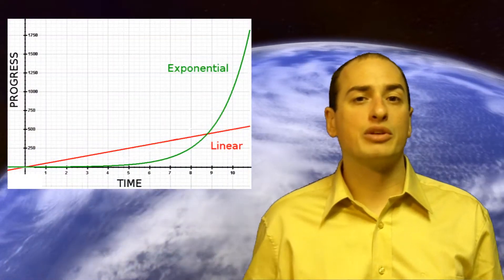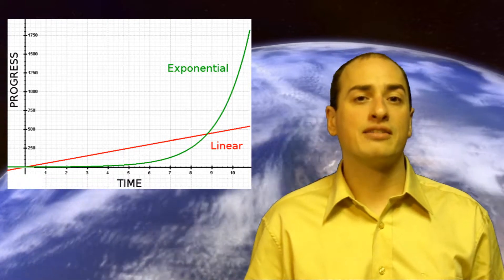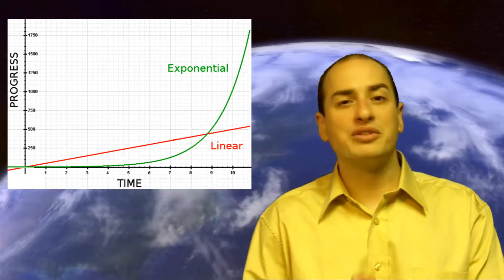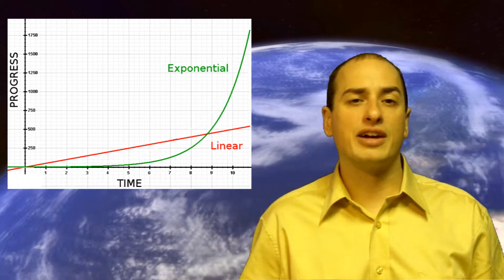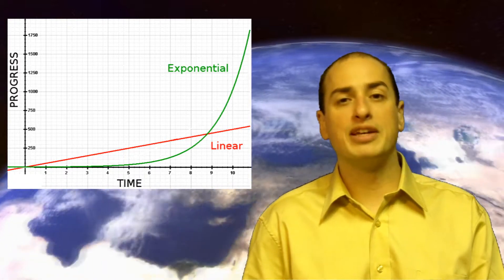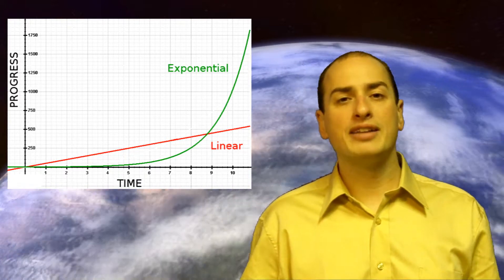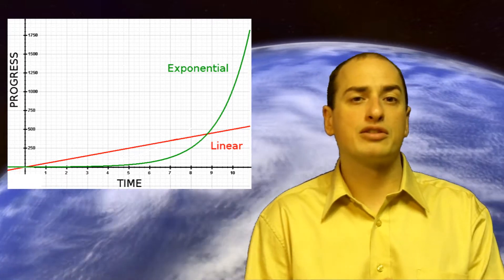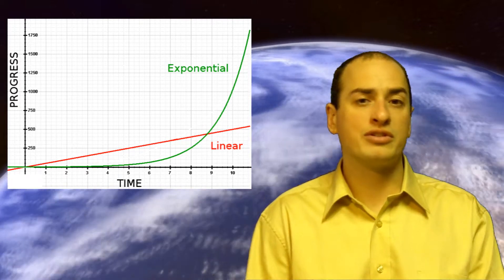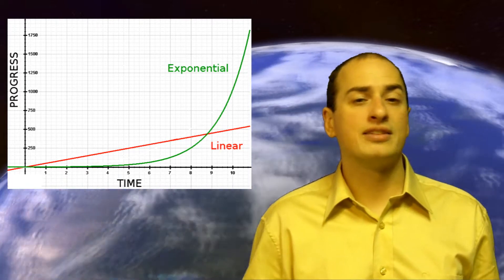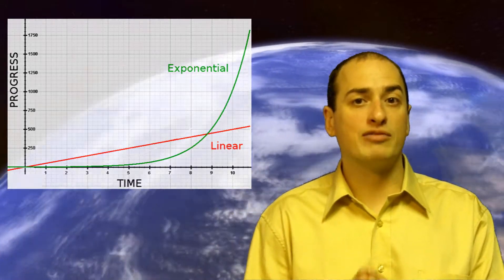Here is a graph showing two kinds of growth, linear and exponential. While the two start off at similar rates, the line representing exponential growth begins to take a sharp turn upwards. Many leading futurists believe we've already crossed the point where growth starts to curve upwards, meaning over the next few decades we will see an incredible rate of progress.